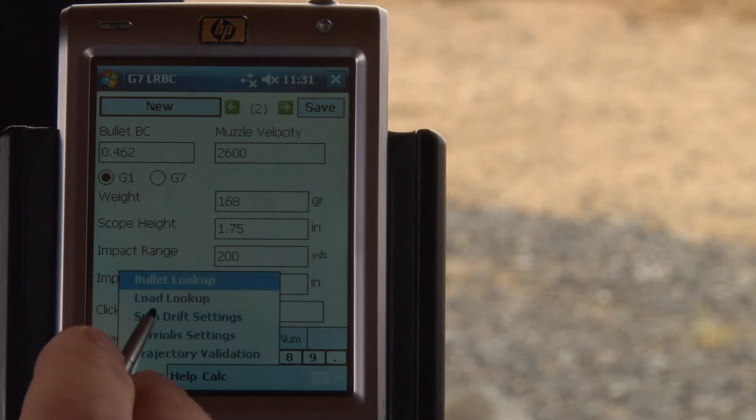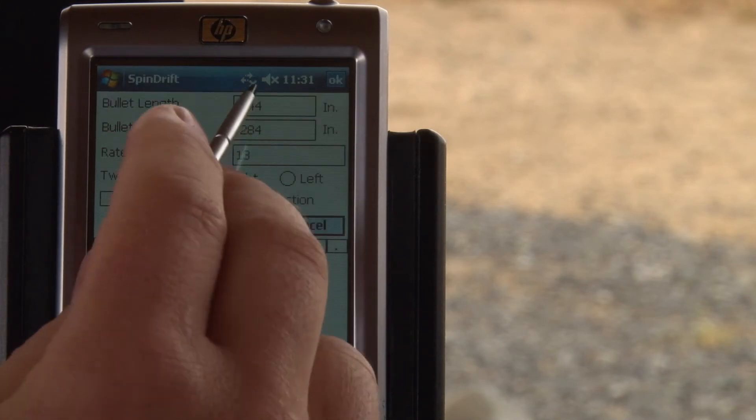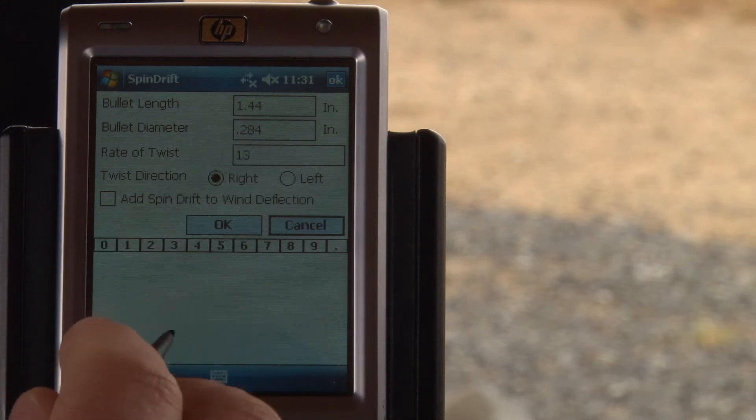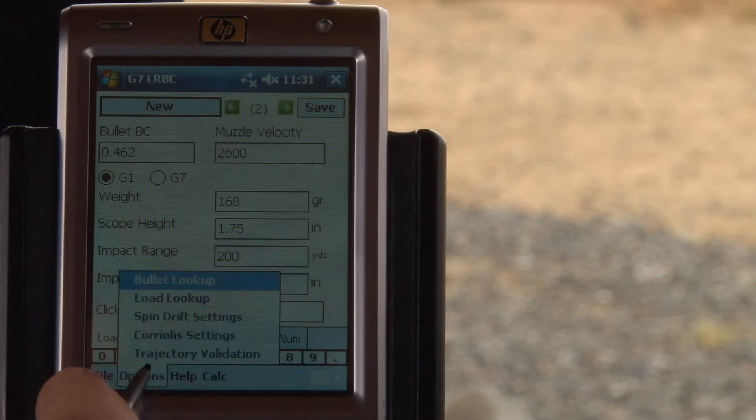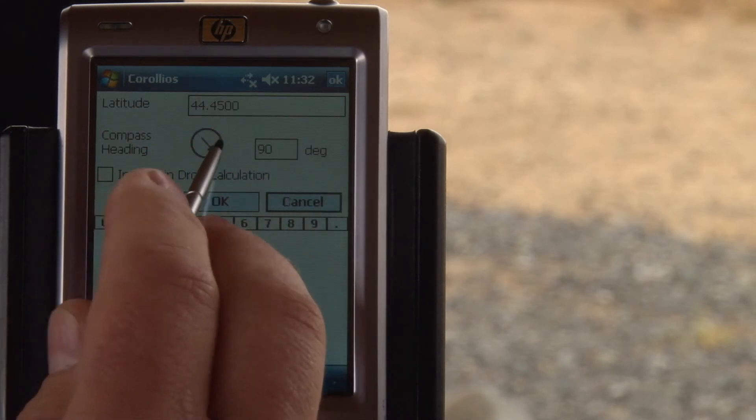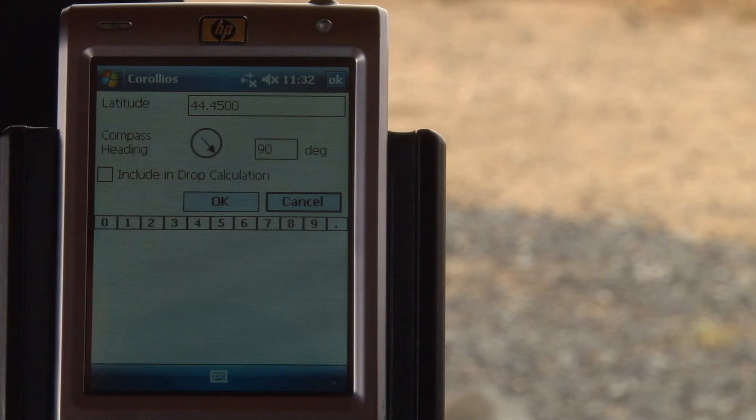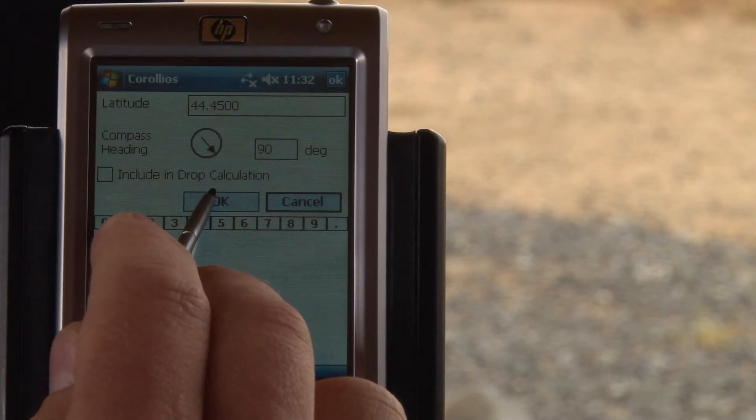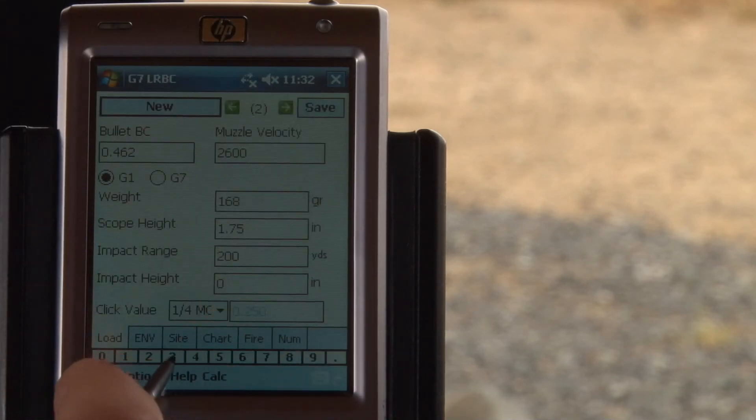You also have spin drift options where you can set your bullet parameters and it will calculate your spin drift. And you've got a Coriolis for the spin of the earth correction. That's pretty straightforward too. That's the direction of firing your azimuth and then your latitude that you're shooting from.